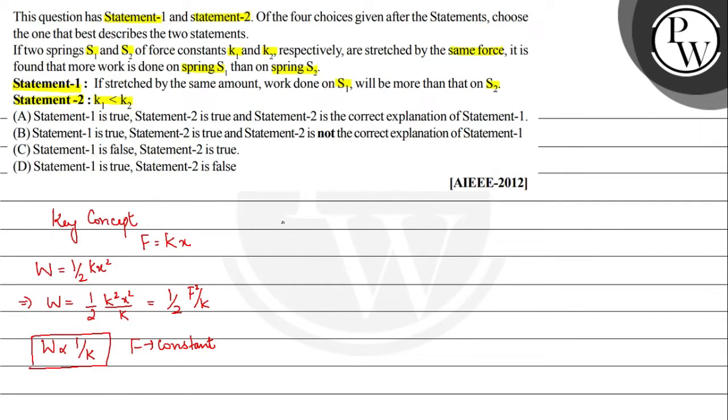So for the second case, we have the question that displacement is constant. So displacement is supposed to be constant in the cases. For the second case, we know that W is equal to half of K into X square.